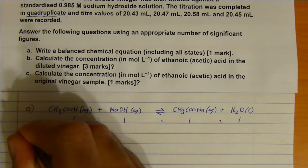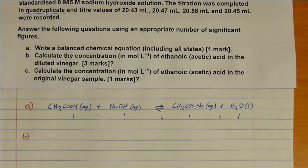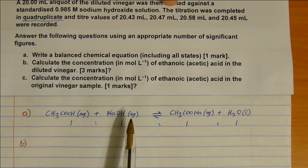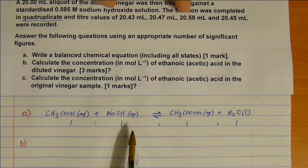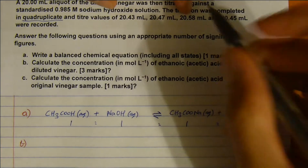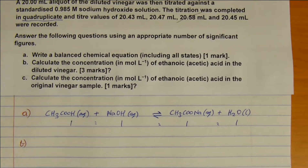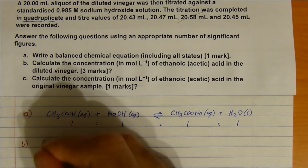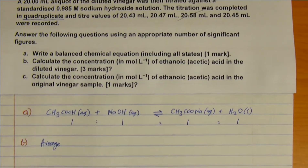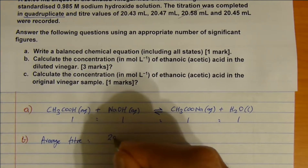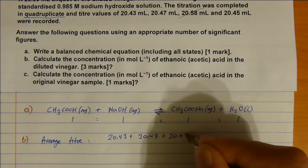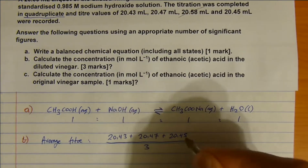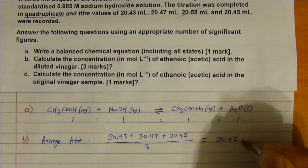Part B: calculating. First I'll find the average of my titers. I've got four results: 20.43, 20.47, 20.58, and 20.45. You'll note that 20.58 seems a bit strange — it's not a concordant result — so I'm going to disregard it. The average will be just the three remaining: (20.43 + 20.47 + 20.45) / 3 = 20.45 mL.